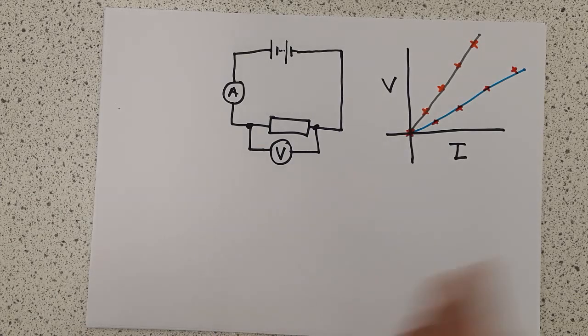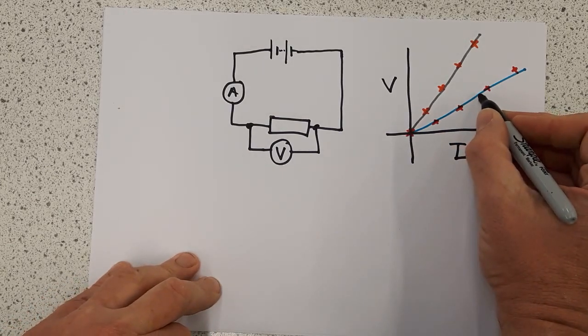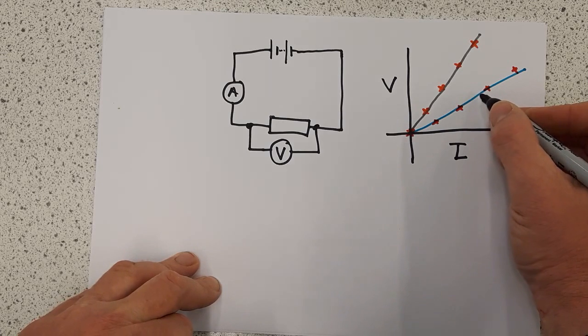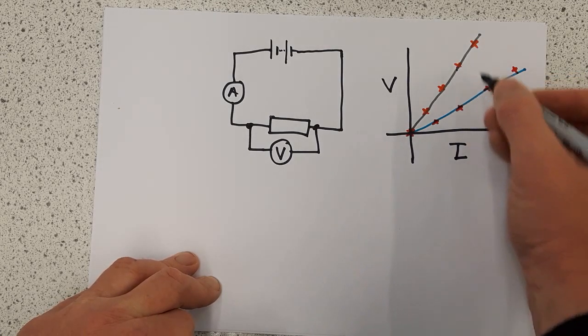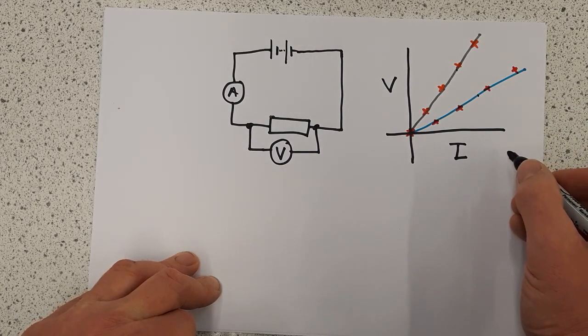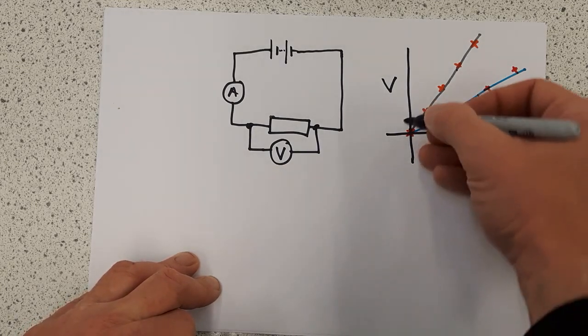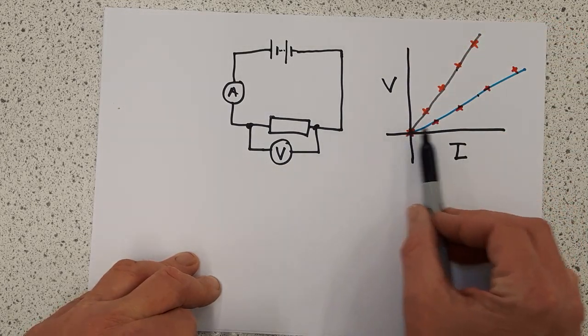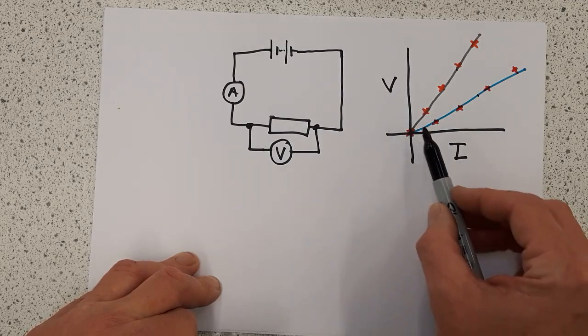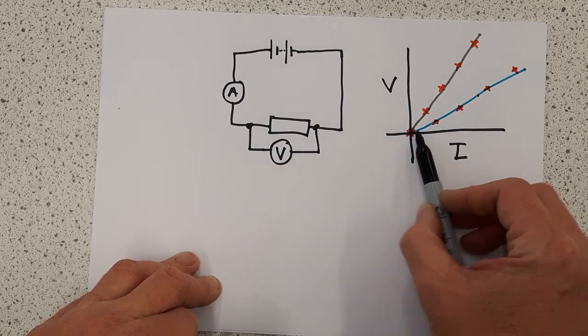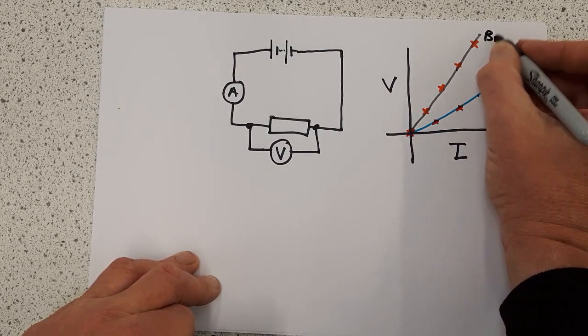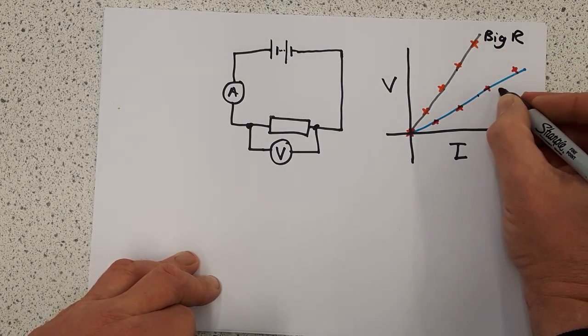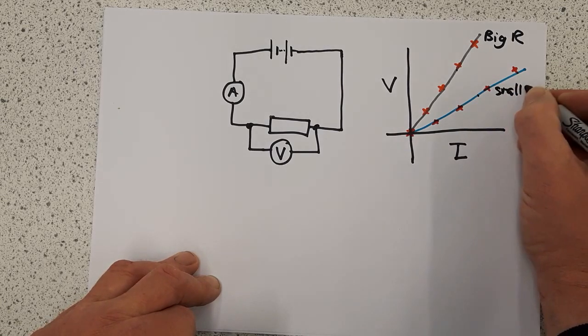In as much as this one here clearly has got a bigger resistance, and this one's got a smaller resistance. Because for this one, as I increase the voltage, the current doesn't go up by very much. And this one, as I increase the voltage, the current goes up by much bigger amounts. So this one seems to have a bigger resistance than this one.